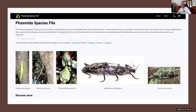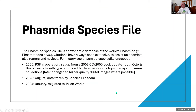Next up, we're excited to welcome Paul Brock, Scientific Associate at the Natural History Museum in London. Paul will talk about how they moved the Phasmida Species File data to TaxonWorks and TaxonPages. That's the home page on TaxonPages. Paul will talk a little about the history of the Phasmida Species File — a taxonomic database of the world's phasmids, with over 3,500 valid species plus many synonyms.